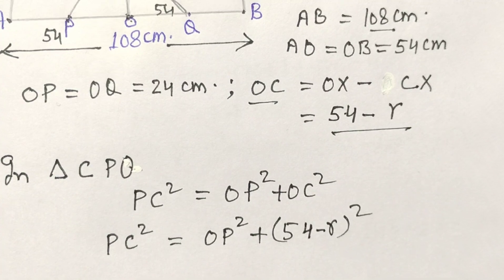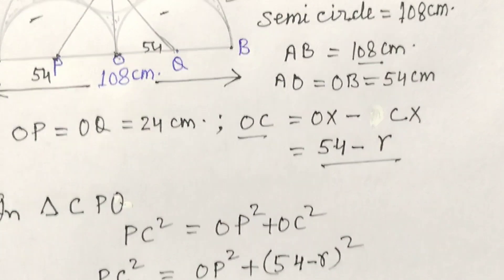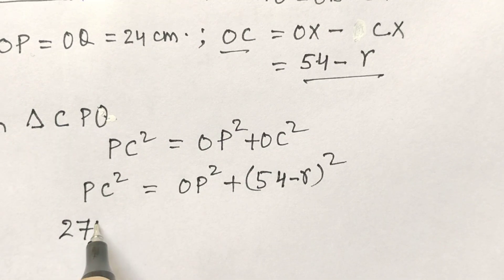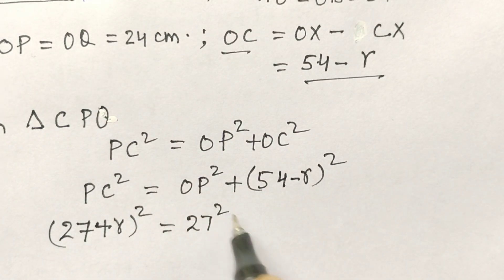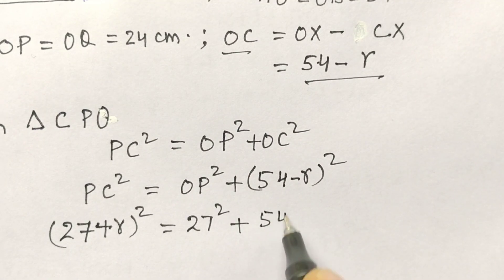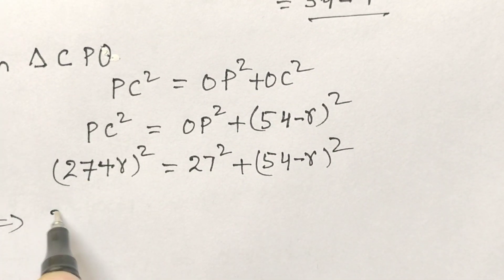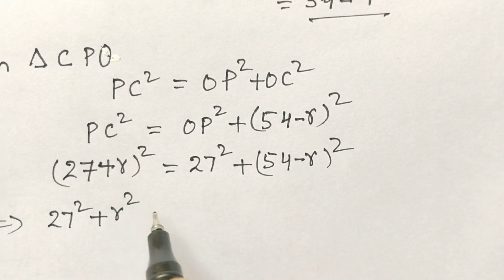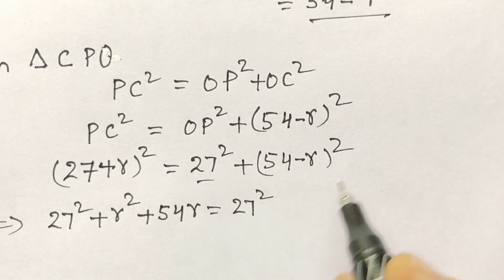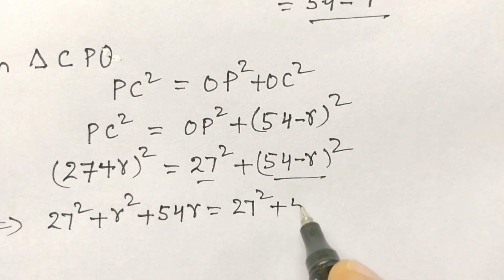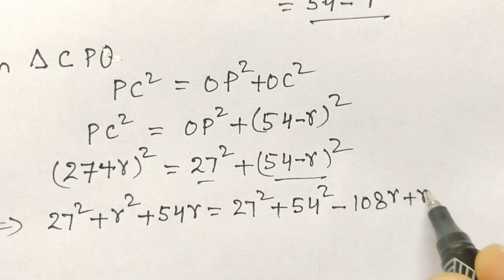So PC² equals OP² plus (54 minus R)². Expanding: PC² equals 27² plus R² plus 54R, which equals 27² plus 54² minus 108R plus R².